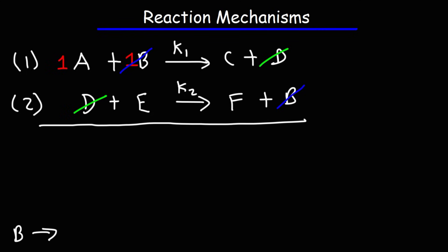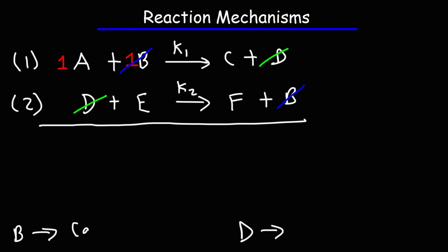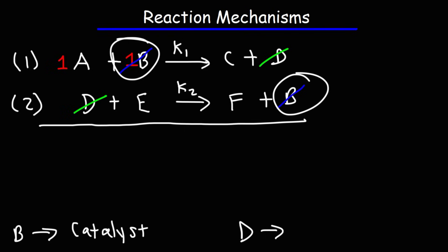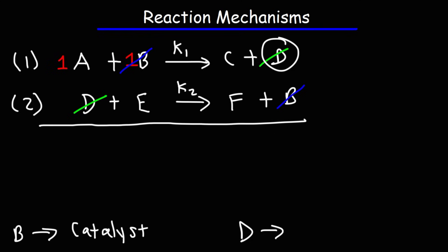Is B the catalyst or the intermediate? Notice that B appears first on the left side of the reaction — it is consumed first. Then it reappears on the right side of another reaction later, so it's consumed first and produced later. That is the catalyst. D is on the right side of step one, so it is produced first, then it shows up on the left side of the second reaction — consumed later. So D is the intermediate.